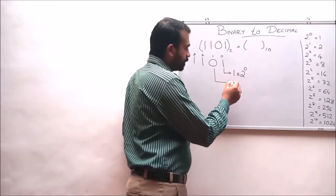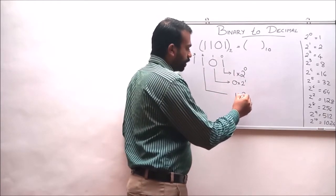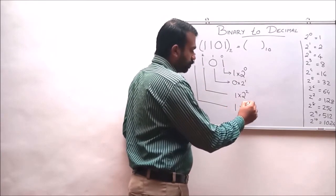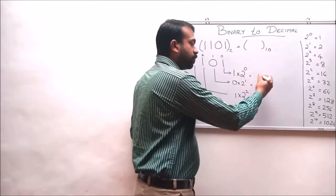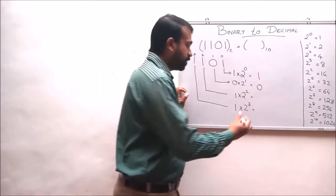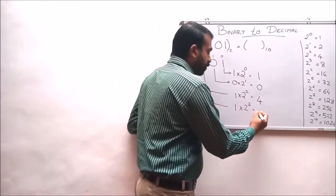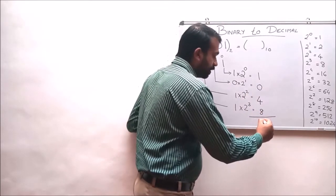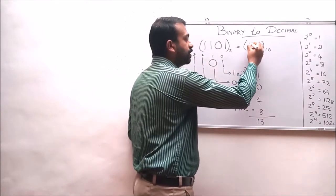We multiply each digit by 2 raised to its digit position: 1 × 2⁰, 0 × 2¹, 1 × 2², and 1 × 2³. Adding all results: 2 raised to 0 is 1, so 1 × 1 = 1; 0 × any number = 0; 2 raised to 2 is 4, so 4 × 1 = 4; 2 raised to 3 is 8, so 8 × 1 = 8. The final answer is 8 plus 4 is 12, plus 1 is 13. So the decimal equivalent of 1101 is 13 to the base 10.